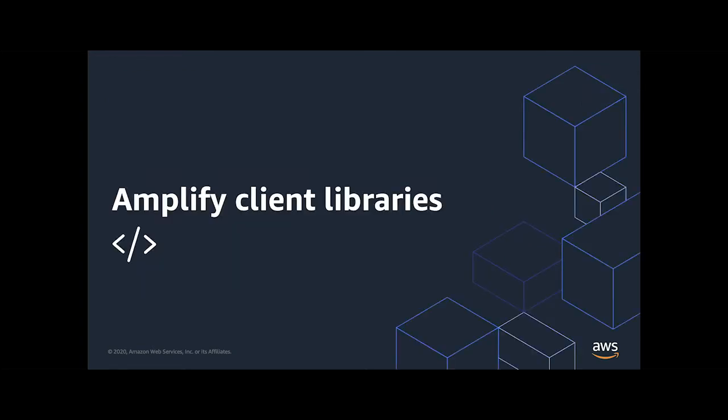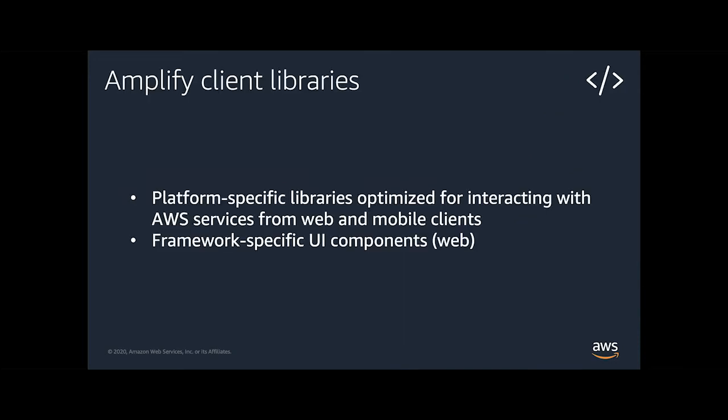Once you've used the CLI to deploy your services, you'll use the client libraries to interact with them. The client libraries are essentially easier ways to interact with AWS services than were available in the past. For instance, you might have used the AWS JavaScript SDK. The Amplify library is essentially an abstraction on top of that, making it much easier and more straightforward. It's also easier to work with the CLI and the Amplify client together based on the configurations the CLI creates.